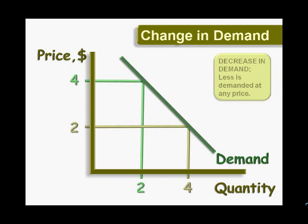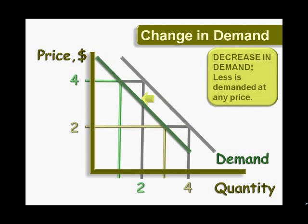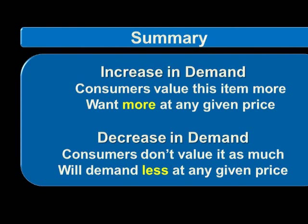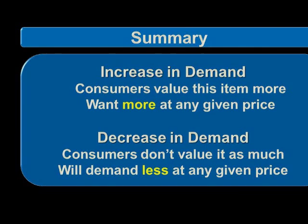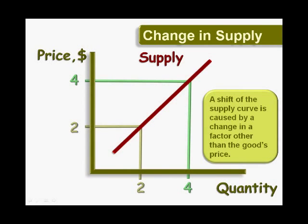Conversely, a decrease in demand means that consumers don't value this item as much as they did before. Thus, they will demand less at any given price. A shift of the supply curve is caused by a change in a supply factor other than the good's price.